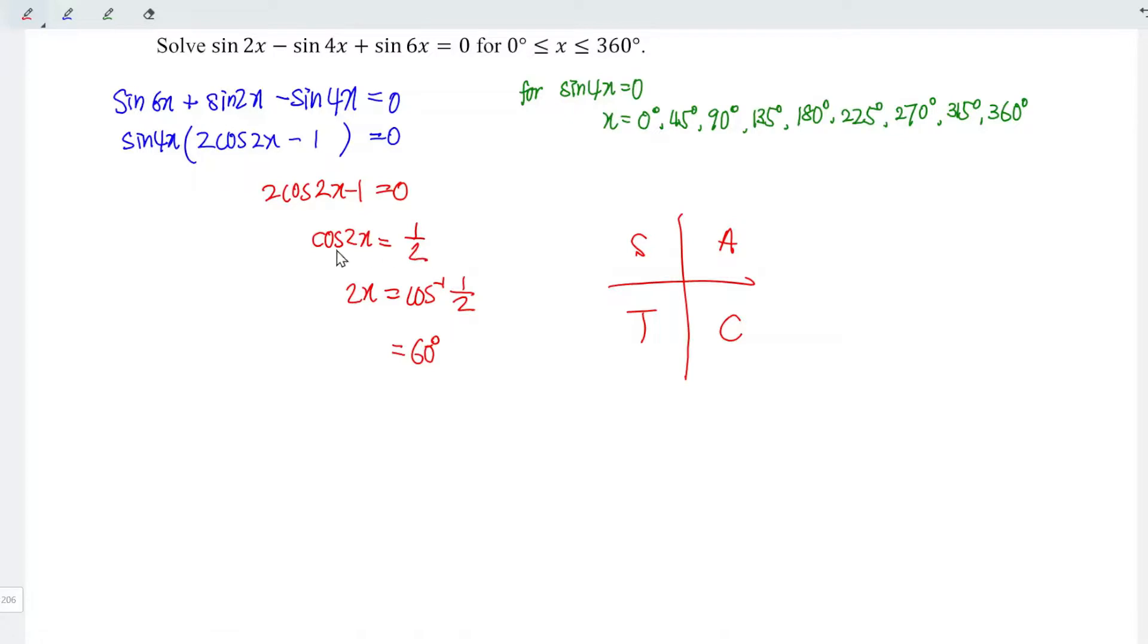Recall that we have ASTC: all sine tangent cosine. If we want to have positive ratio for cos function, which means that the angle must be within the first or the fourth quadrant, equivalently zero degrees to 90 degrees or 270 degrees to 360 degrees. Since 60 degrees is within zero to 90, which means that it's in the first quadrant, so we can accept this value. Now let's determine the value in the fourth quadrant.